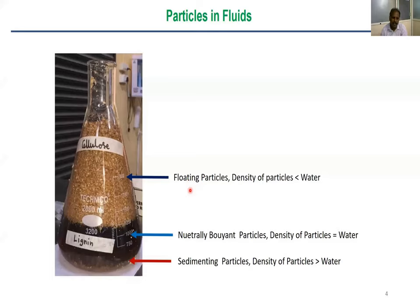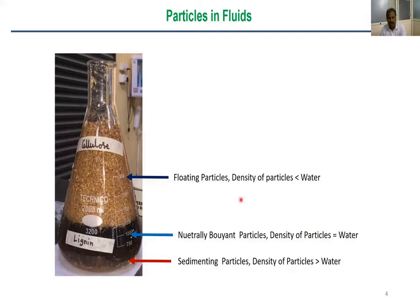During pre-treatment, alkali solution is mixed with the powder. Some particles float due to buoyancy, some sediment at the bottom due to gravity, and some remain in the middle — this middle region contains the brown lignin-containing liquid. Managing both floating and settling particles is essential in batch reactors and is even more difficult in pumps.